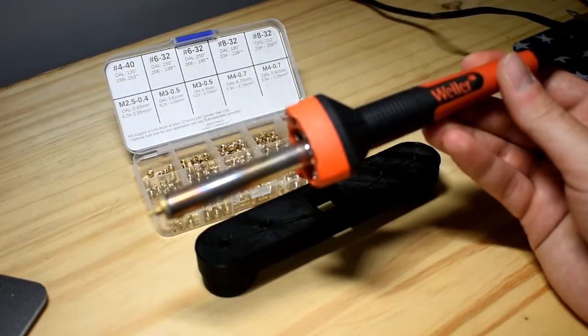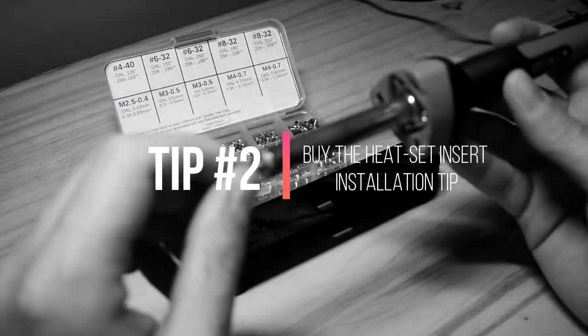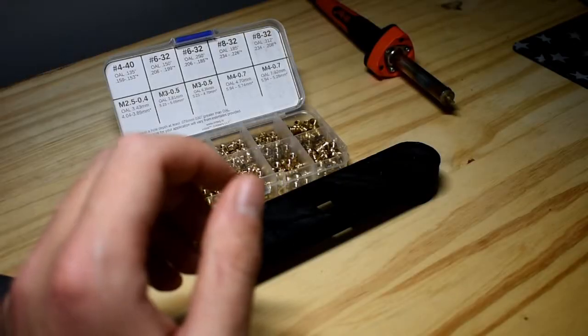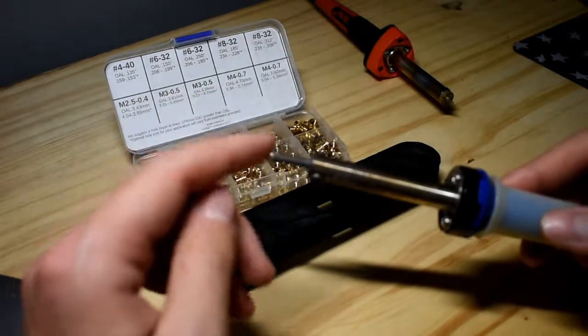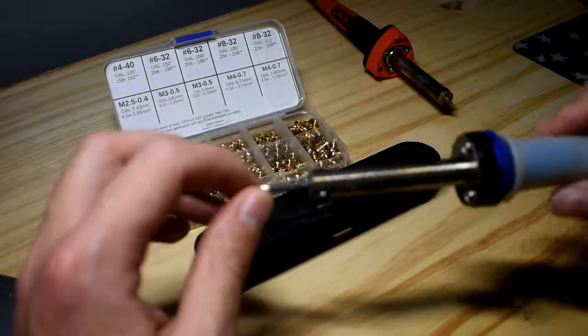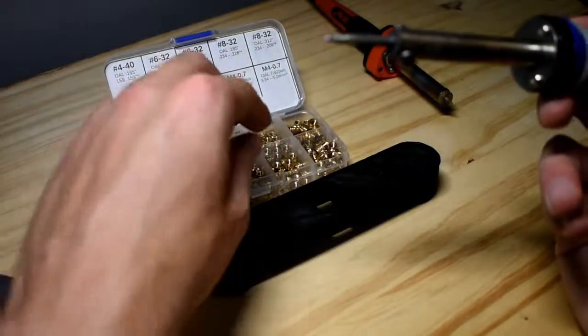I'm using a Weller soldering iron. I already have the heat set insert attachment. You could use a soldering iron tip, but you want to be careful because sometimes the tip goes past the insert and if you push it in too far then it will start to melt the plastic.